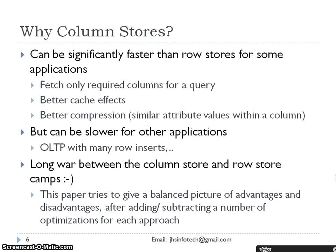Why column store? It can be significantly faster than row stores for some applications — fetch only required columns for a query, better cache effects, better compression, and similar attribute values within a column. But it can be slower for other applications, particularly OLTP — online transaction processing — with many row inserts, because in OLTP we do record-by-record transactions. This paper tries to give a balanced picture of advantages and disadvantages after adding and subtracting optimizations for each approach.